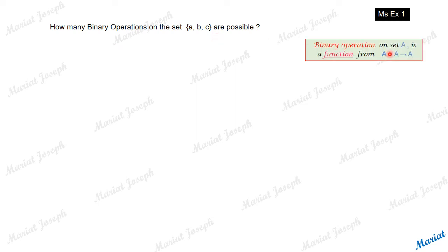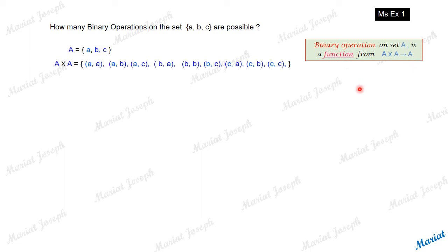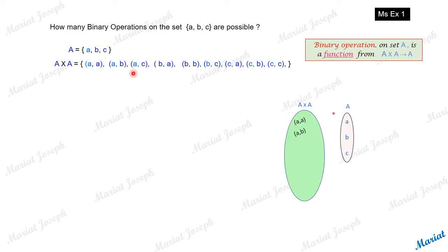A binary operation on a set A is a function from A cross A to A. Now set A has three elements. Then A cross A will have 3 × 3 = 9 pairs: AA, AB, AC, BA, BB, BC, CA, CB, CC. These are the elements in A cross A, the domain. And the co-domain has three elements.